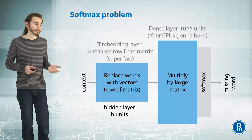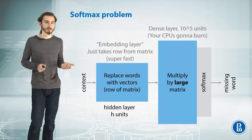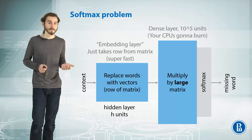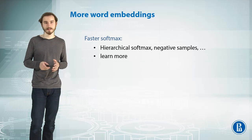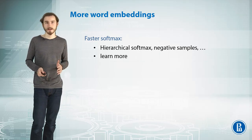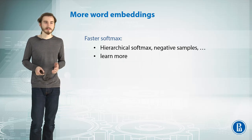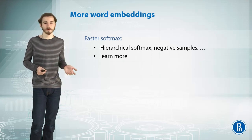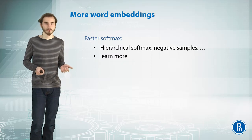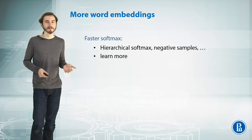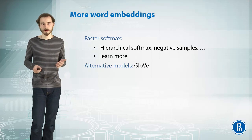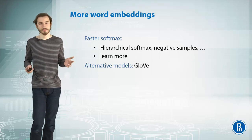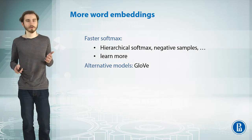Instead, there are special modifications of softmax like hierarchical softmax or sampled softmax, which try to estimate this more efficiently - sacrificing either some mathematical properties or the determinism of the probability estimate by adding some noise. There are also similar models that avoid computing probabilities and avoid softmax altogether, like GloVe (Global Vectors), which uses no such non-linearity in its pipeline.